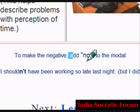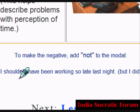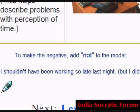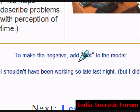To make the negative, add 'not' to the modal. For example: I shouldn't have been working so late last night. That means I did — I was working late. I shouldn't have been working so late last night, so I slept in the morning. That is how you use the negative form with 'not' in the modal verb.